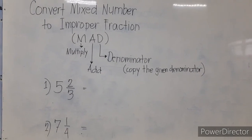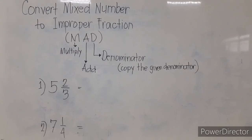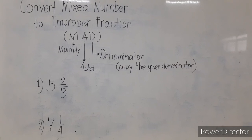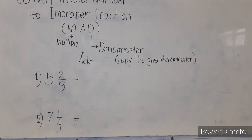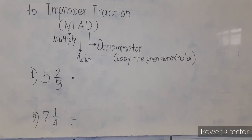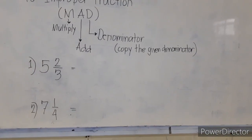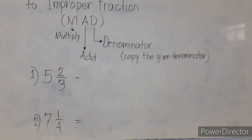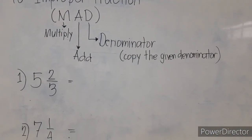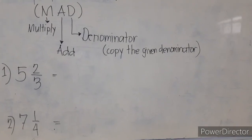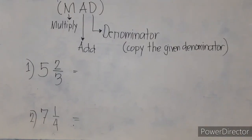Welcome, everyone. This time we are going to convert this number to improper fraction using MAD. M stands for multiply, A stands for add, and D stands for denominator. We simply have to copy the denominator.